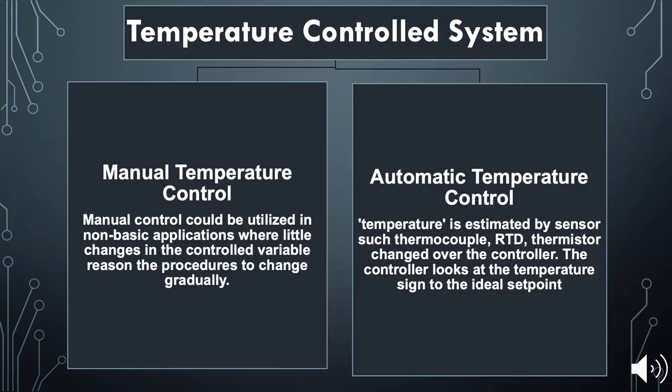There are two types of temperature control systems: manual and automatic. Manual is manually controlled and could be utilized in basic applications where you can change it manually. In an automatic temperature control system, the temperature is estimated by sensors such as thermocouple, RTD, and thermistor, which feed data to a controller set to a desired setpoint temperature.